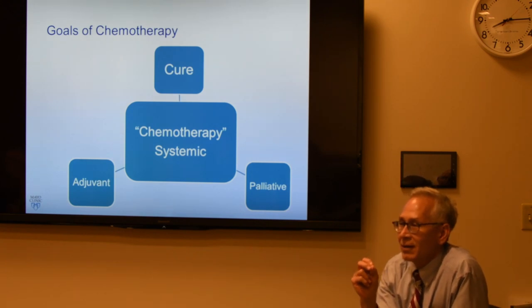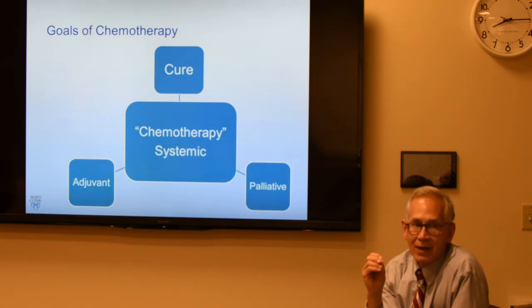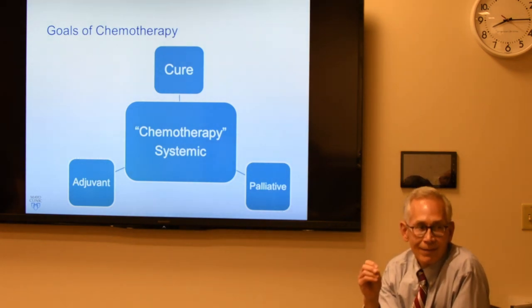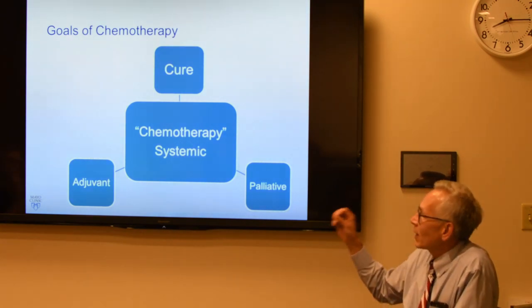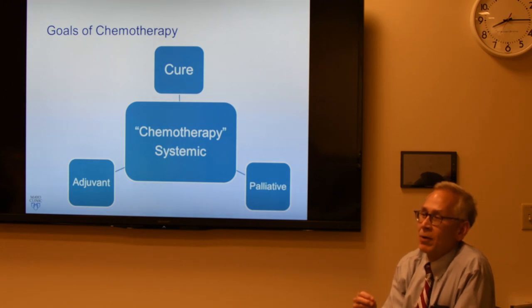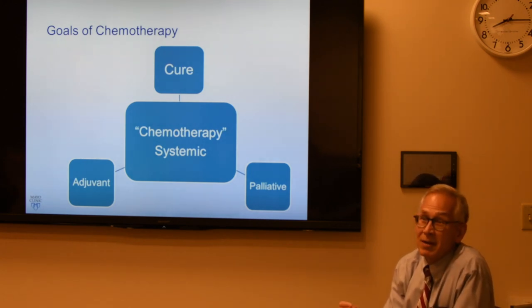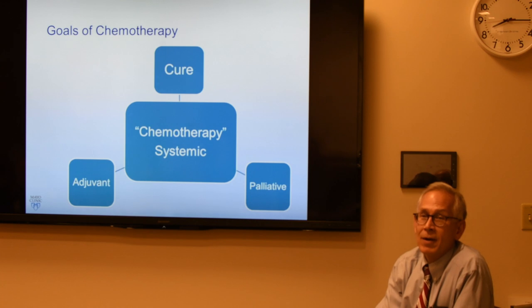Whenever we see somebody and give them systemic therapy, we need to know our goals of therapy. If we can define that with the patient and family, they're going to be infinitely happier because you're setting the tone and expectations. Can we cure people with chemotherapy alone for sarcomas? The answer is no. Maybe we can cure testicular cancer, leukemias, or lymphomas with chemo alone — but probably not sarcomas.